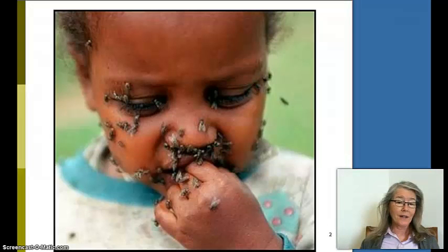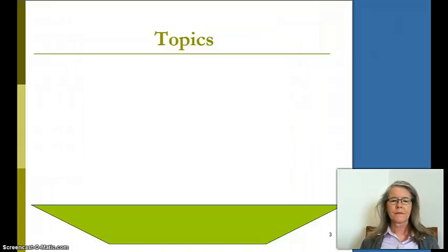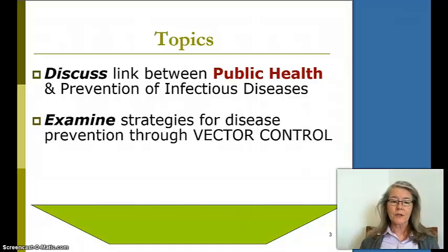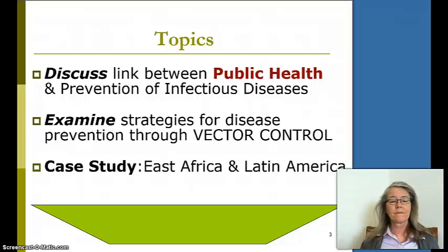These are not regular house flies — these are tsetse flies. They're very aggressive, and it's difficult to keep them away, especially from children. We're going to discuss the link between public health and prevention of infectious or communicable disease, and examine strategies for disease prevention through vector control — mosquitoes, sand flies, tsetse flies — with a case study focusing on East Africa.